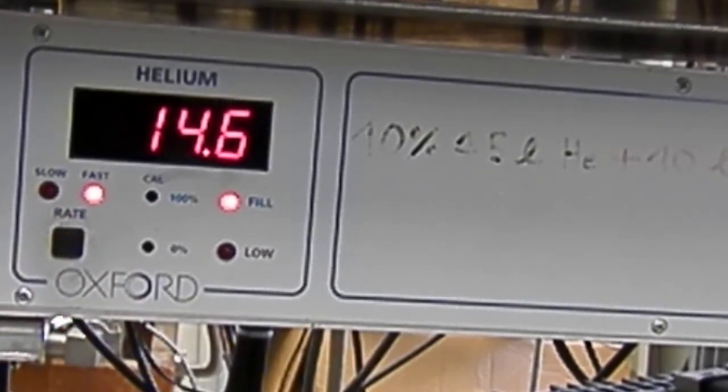Switch on the fast mode because fast mode means every one minute there is a measurement of how much helium is there during the filling process. You should switch from slow mode to fast mode.